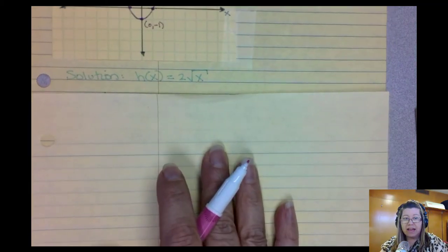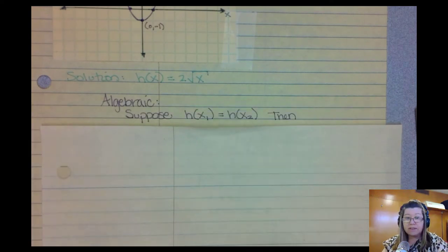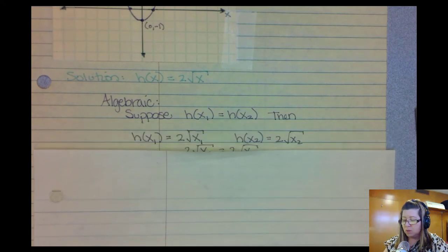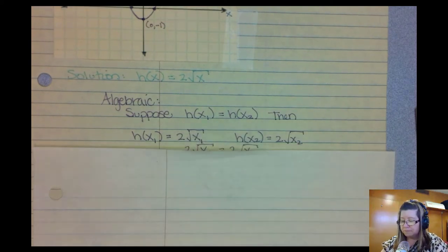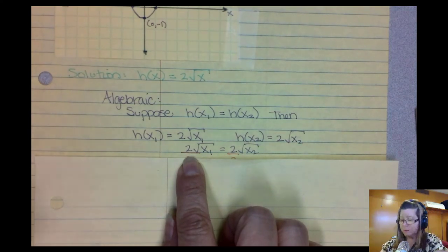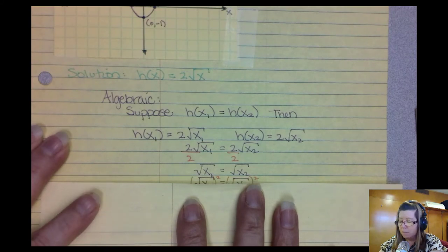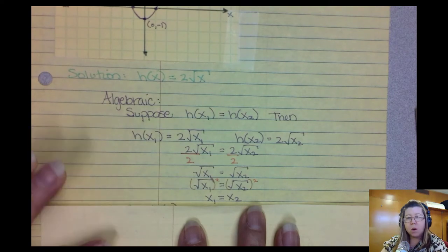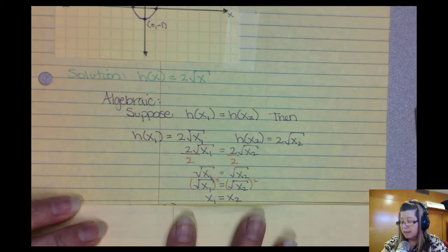Let's take a look at the third one: h of x equals 2 times the square root of x. I'm going to jump to the algebraic approach. Suppose that h of x1 equals h of x2. Then 2 times the square root of x1 equals 2 times the square root of x2. Divide by 2: square root of x1 equals square root of x2. Square both sides: x1 equals x2. Because the only way h of x1 equals h of x2 is when x1 and x2 equal one another, this is indeed a one-to-one function.